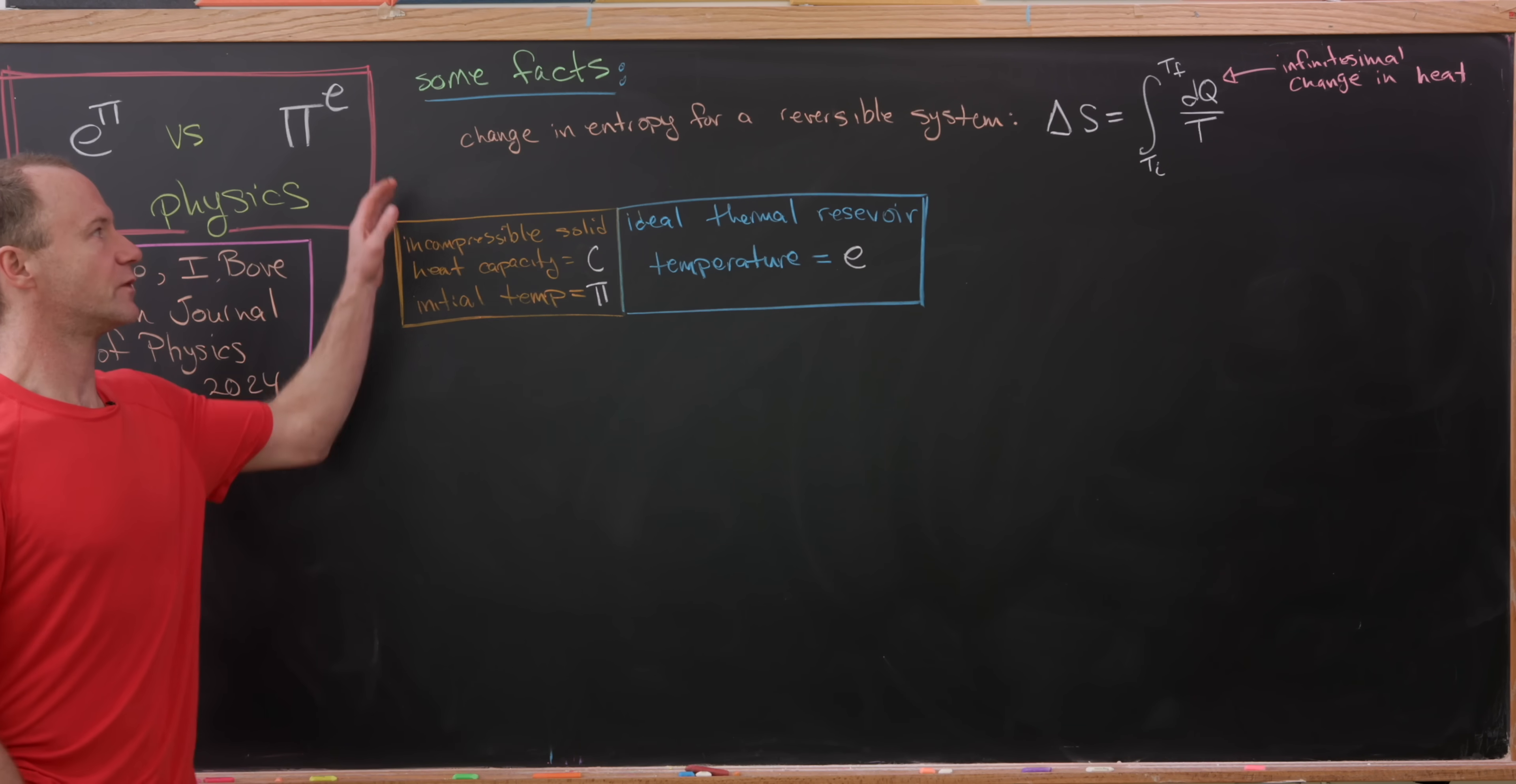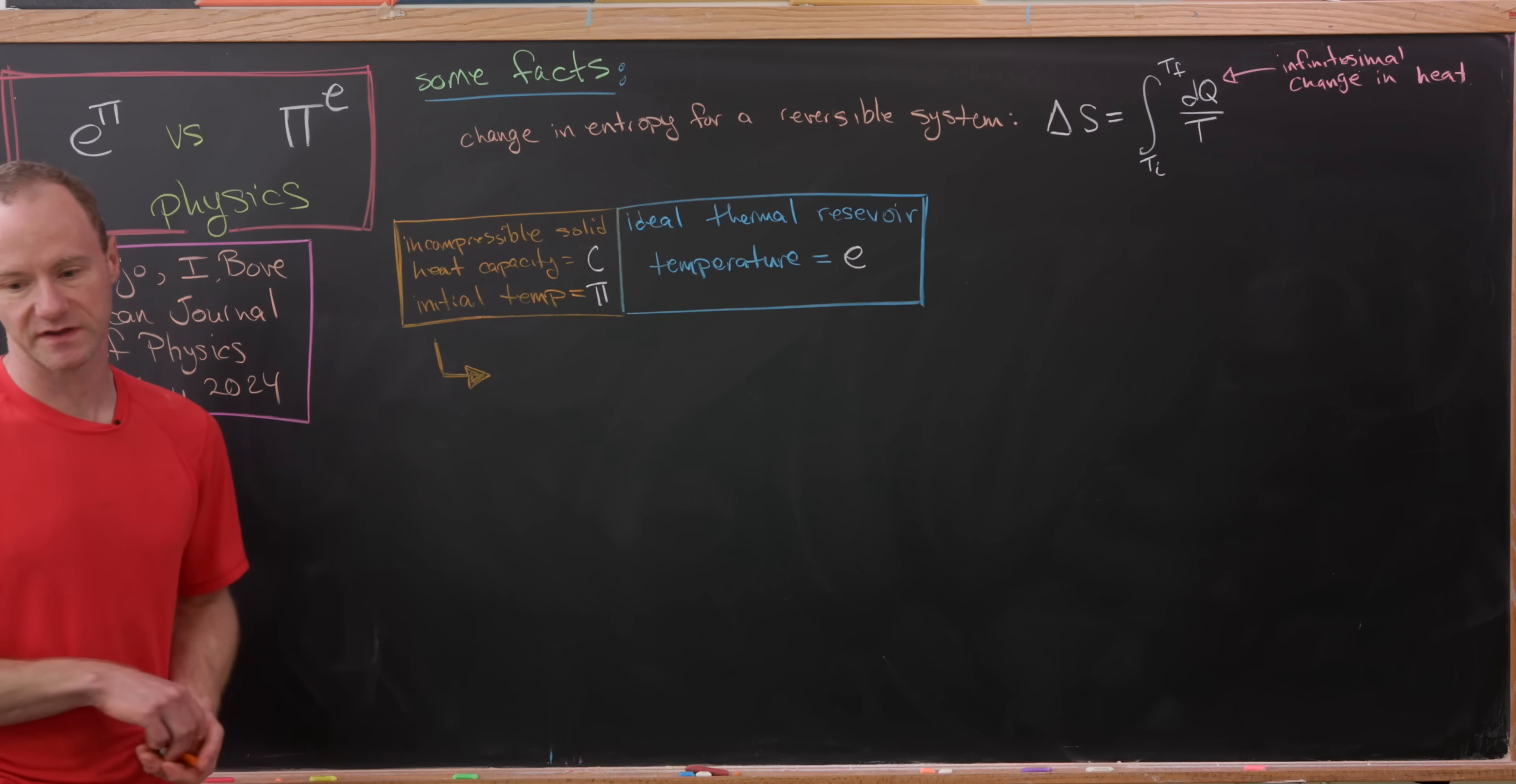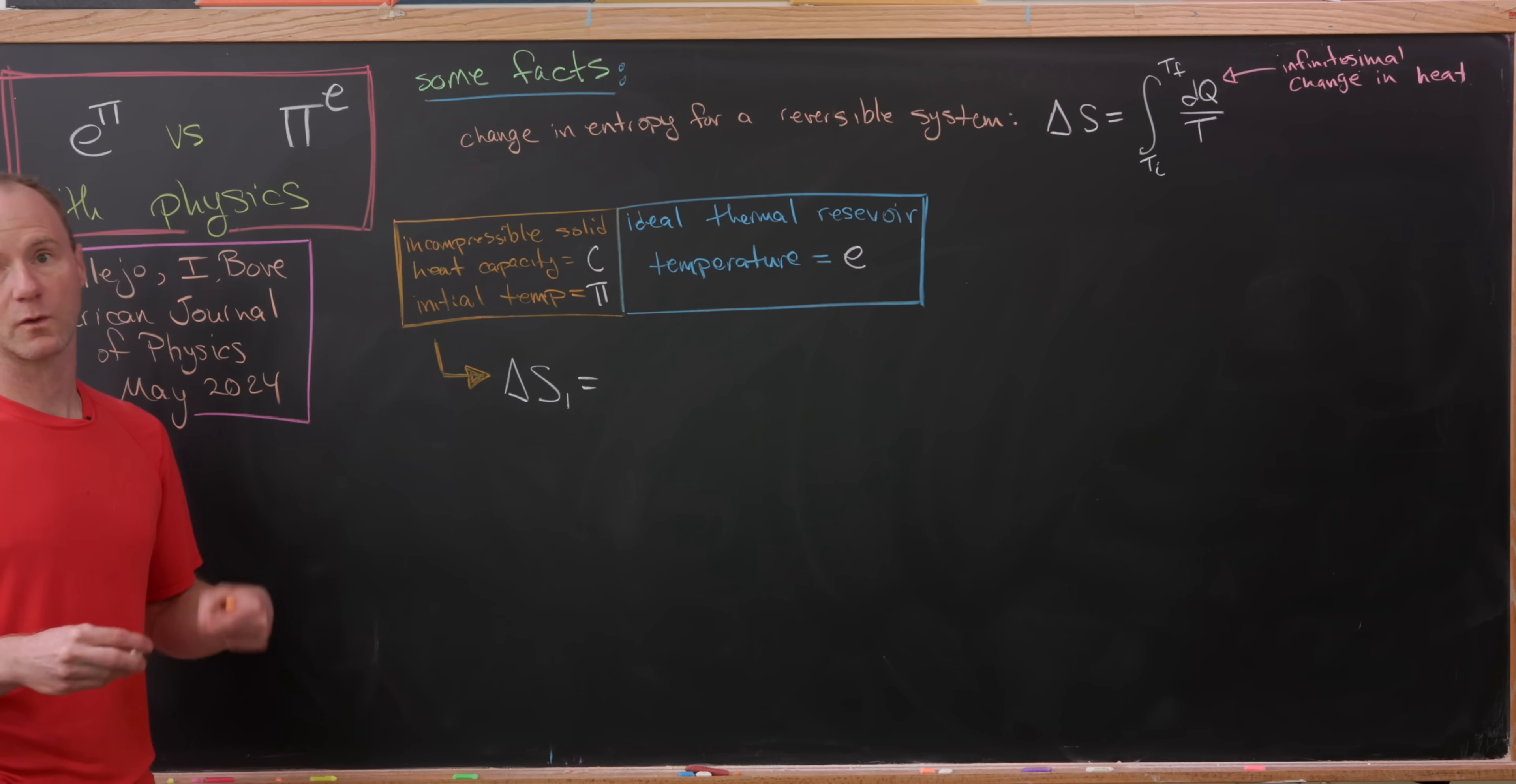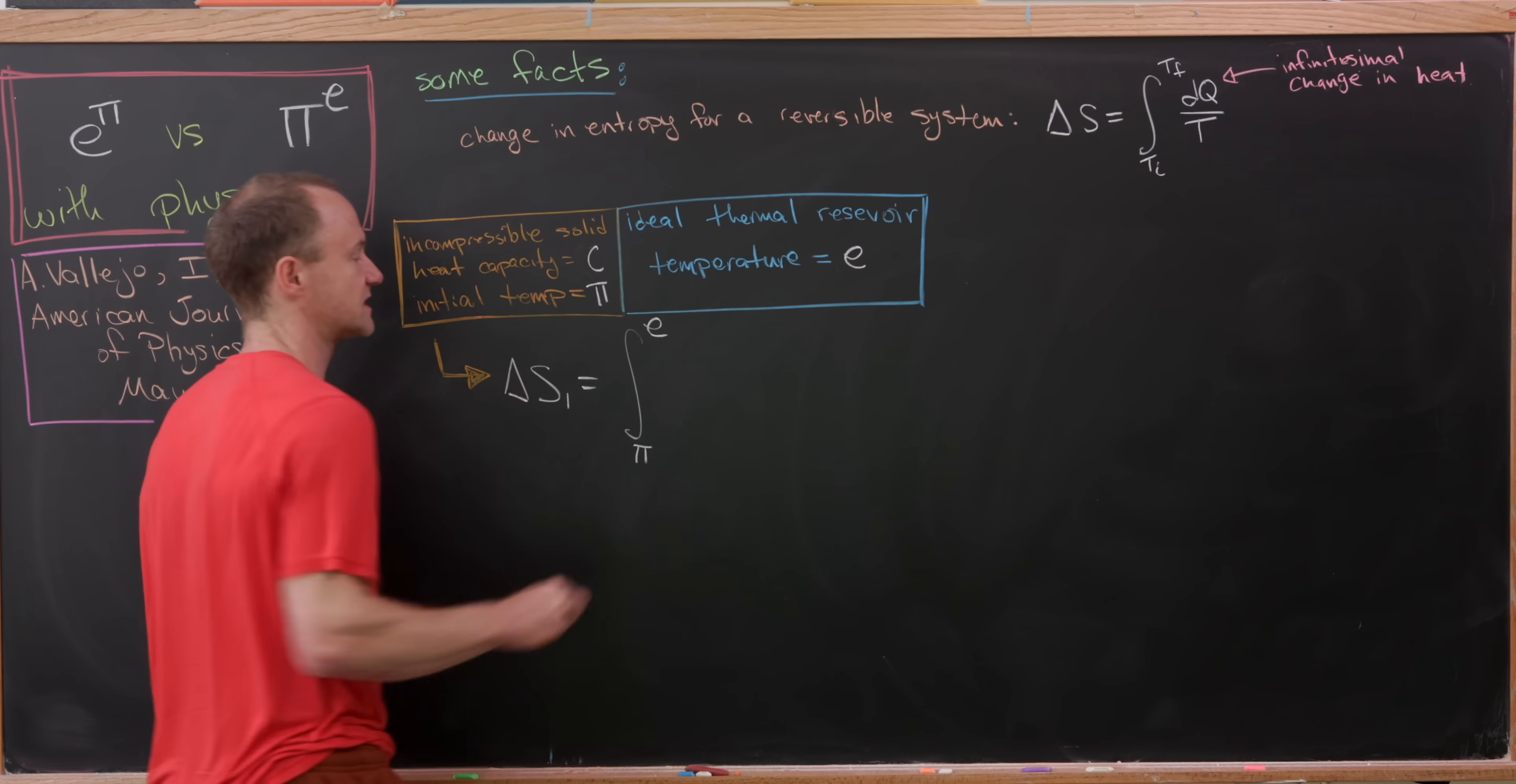Okay, so we've got this equation for the change in entropy on the board, so we probably want to use that. So let's start by calculating the entropy of this solid, or I guess I should say the change in the entropy for this solid. So I'll call this delta S sub 1, where I guess I'm using the subscript 1 for the solid. Okay, so that's going to be the integral from the initial temperature, which is pi, up to the final temperature of E,